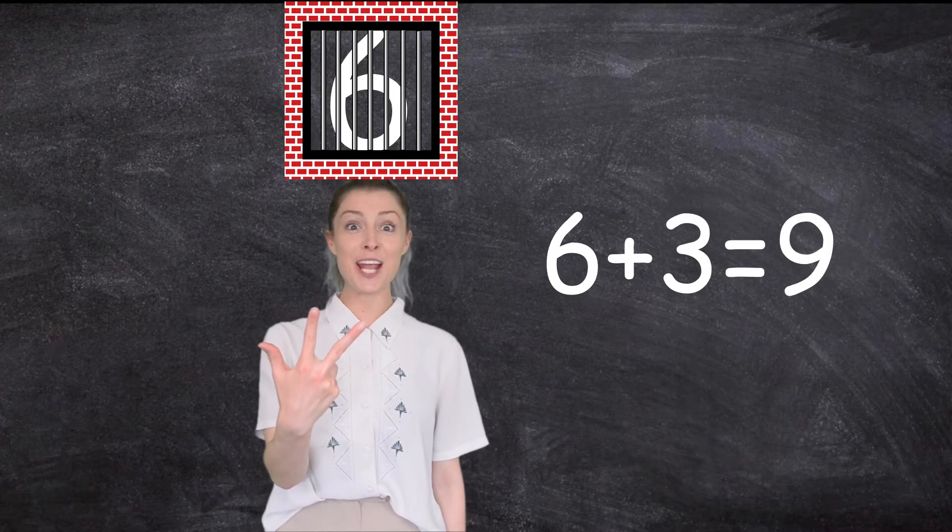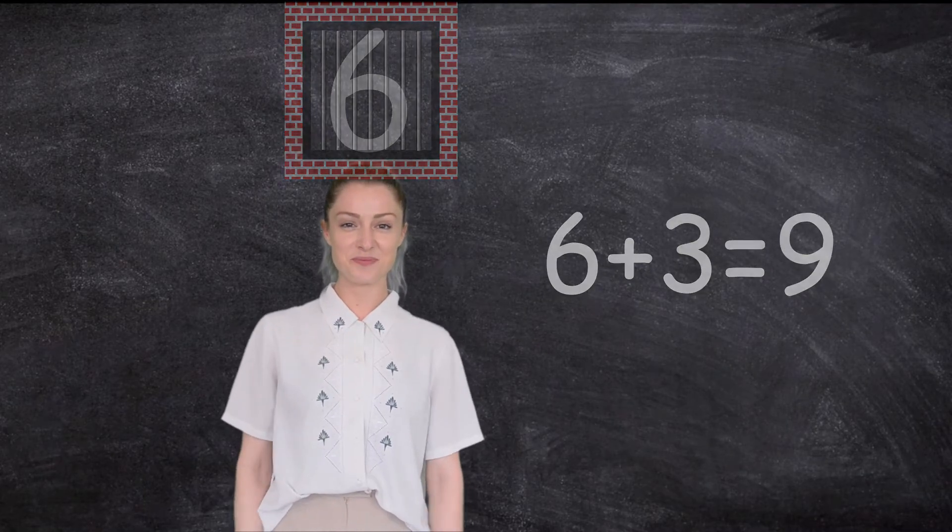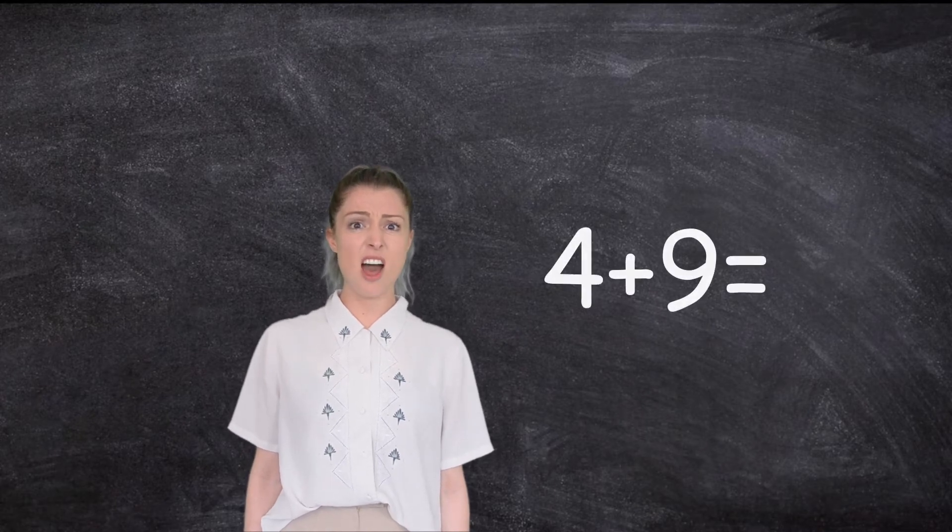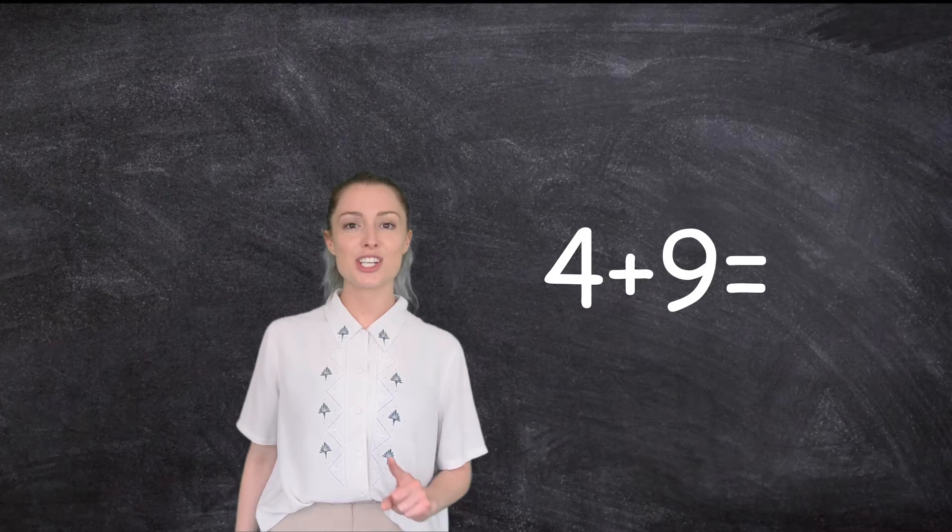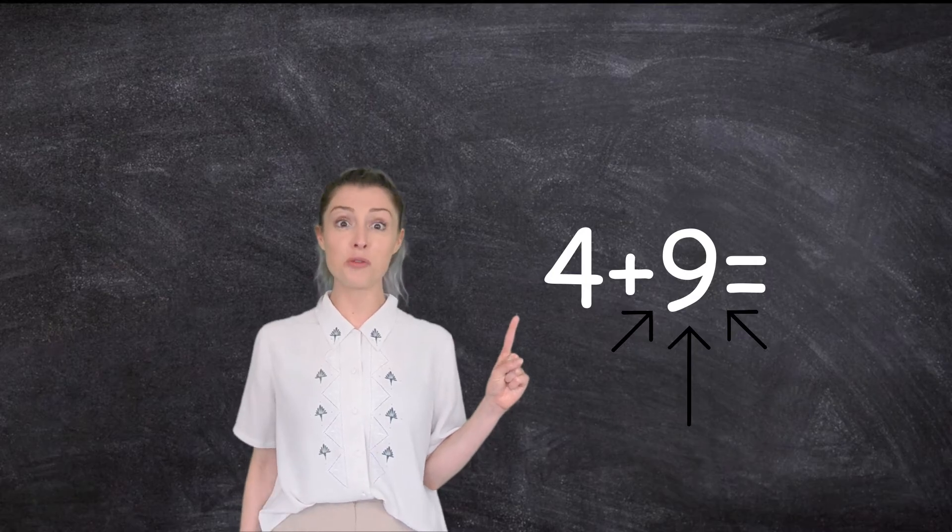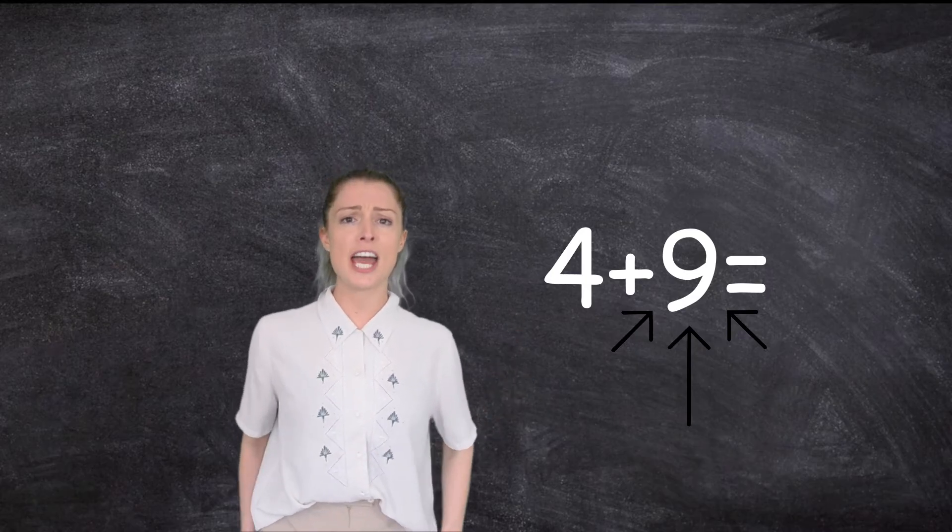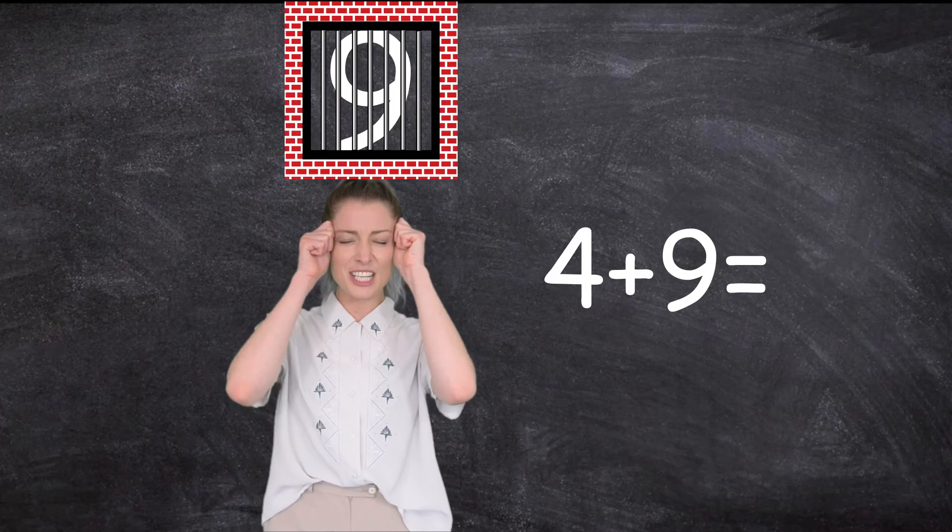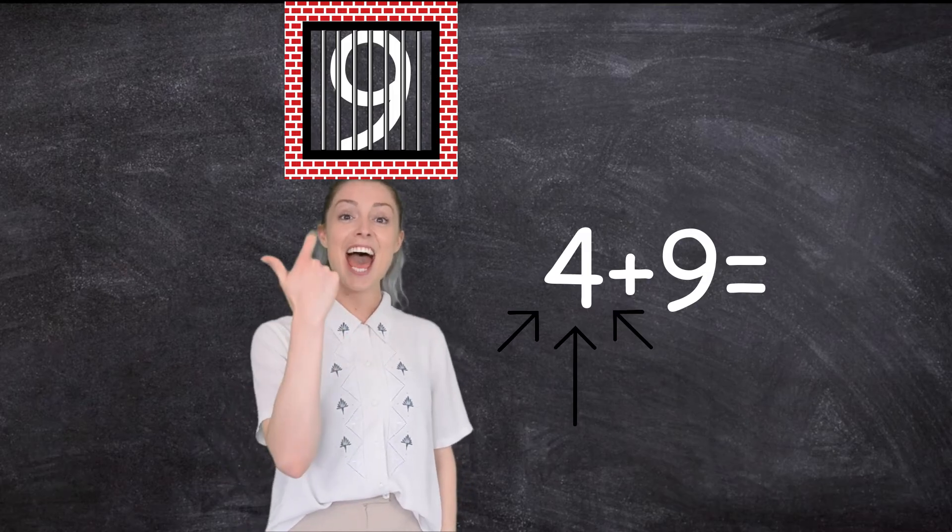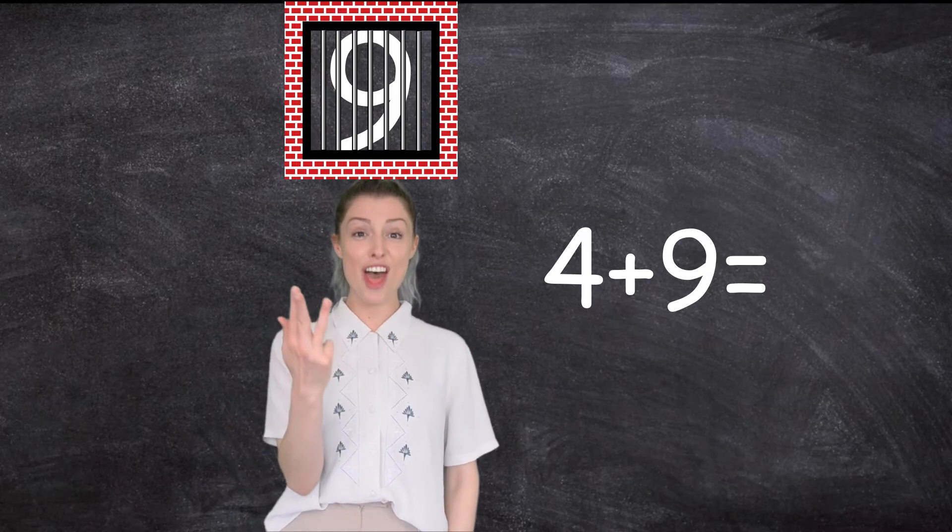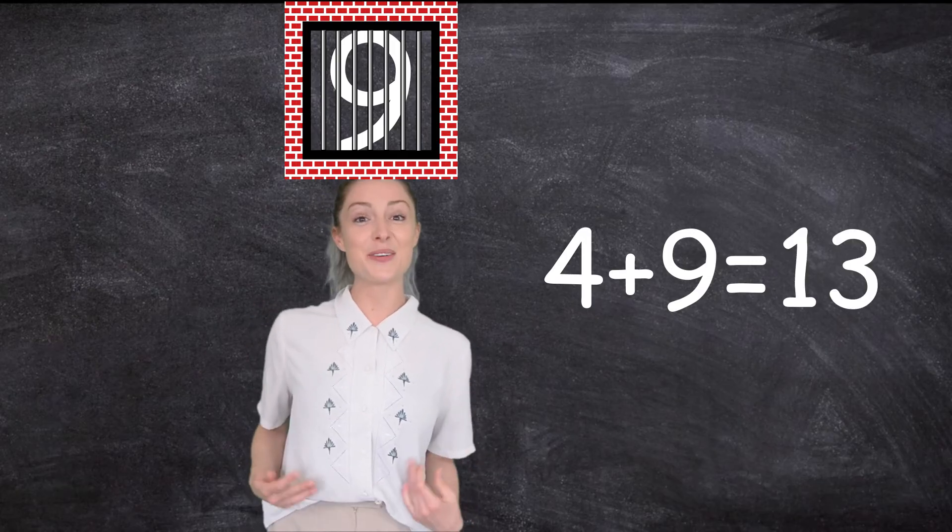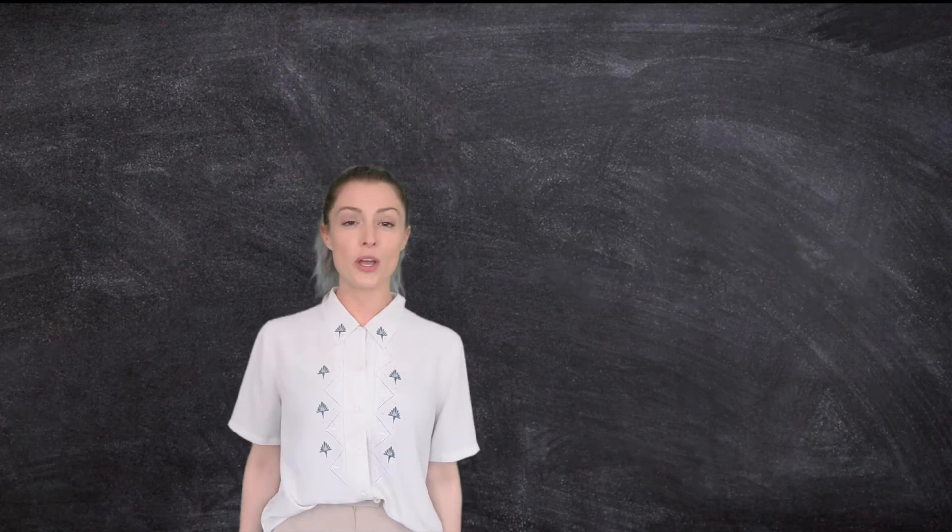Six plus three equals nine. Well done. Let's have another go. This one's a big one. Four plus nine. Now, we're not going to start at four. We're going to start at nine because it's the biggest number, then count on four. Okay, so nine. Let's lock it in our head. Let's count on four. Nine, ten, eleven, twelve, thirteen. Thirteen.